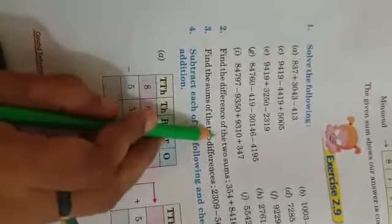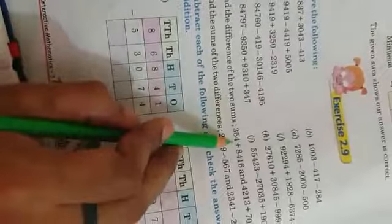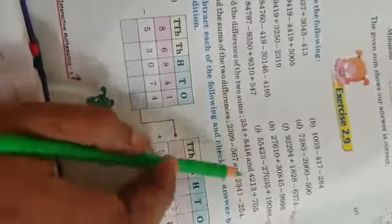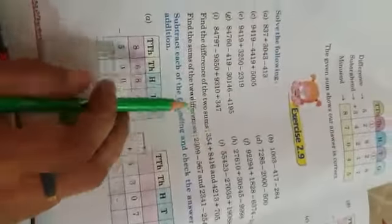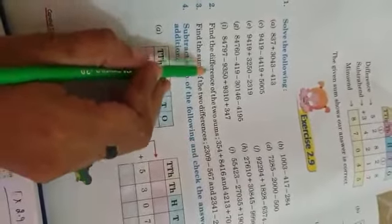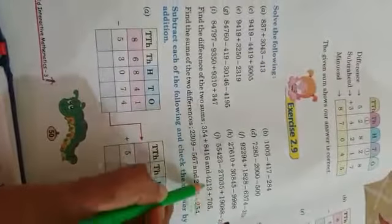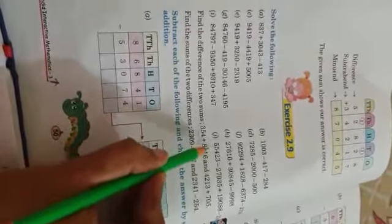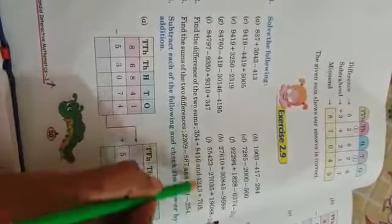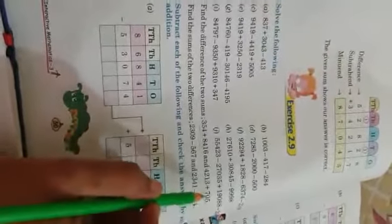Now, moving towards the second sum, find the difference of the two sums, this and this. Basically, students, we have to find the difference. The two sums means, firstly we have to add this and this, then add this and this. The answer we will get from this and this, we have to subtract these answers.